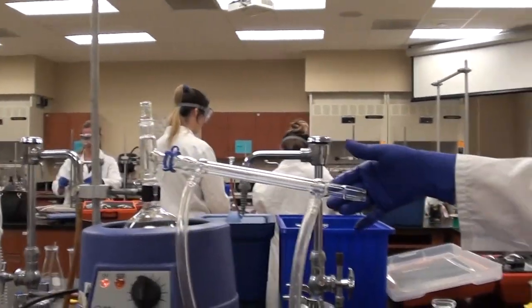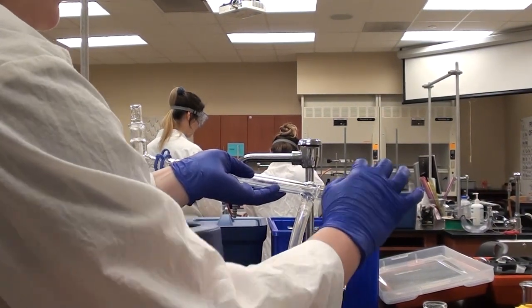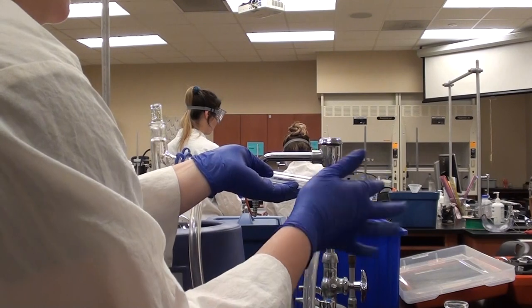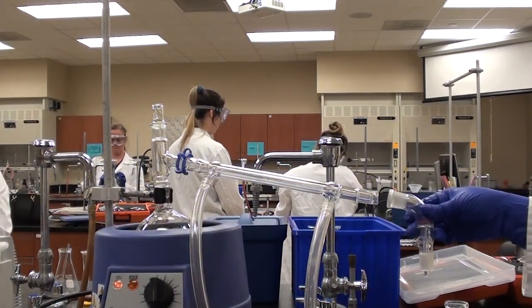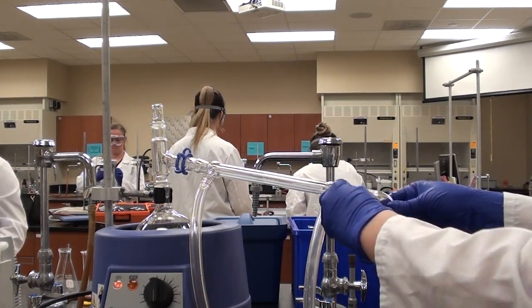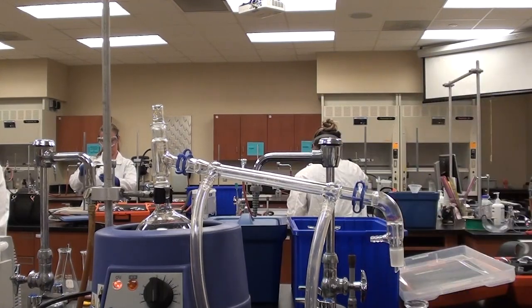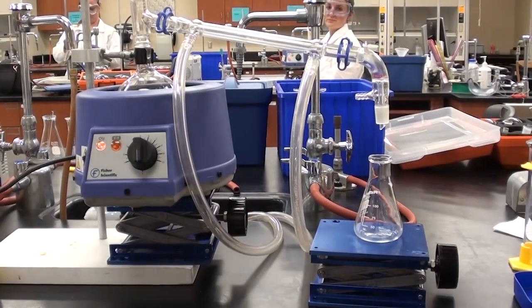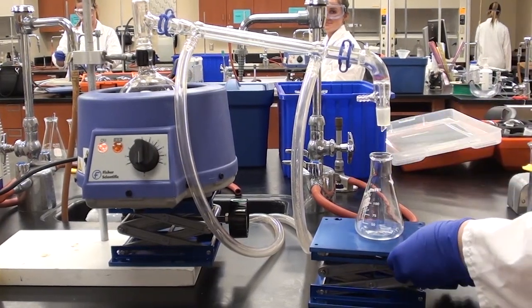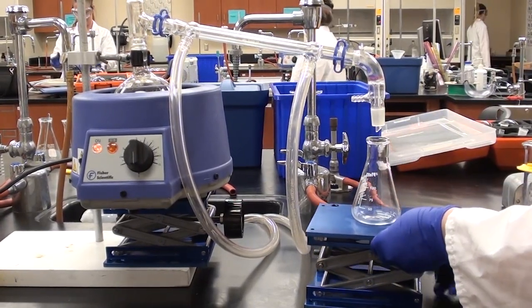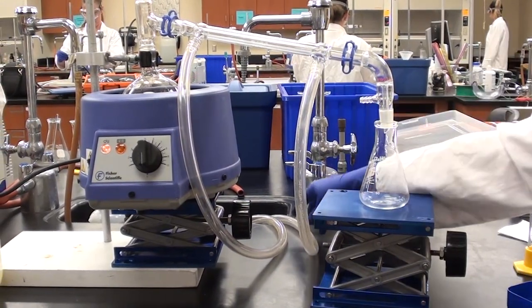Now we're going to grease the end of the condenser here. Then we're going to put the receiving adapter on the end of that, and that gets a keck clip as well. We've got a lab jack set up with a receiving flask at the bottom. Could you please raise that receiving flask so it's inside the collection adapter? Now we're ready to get started.